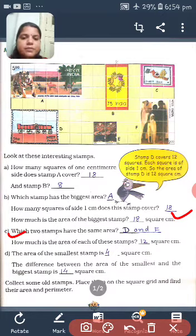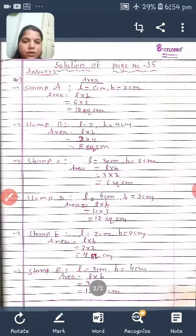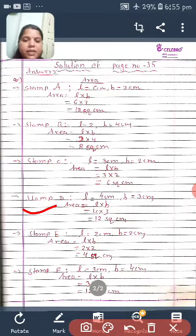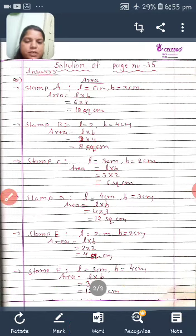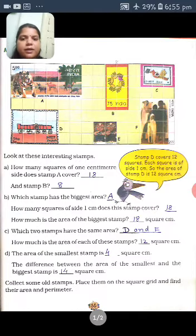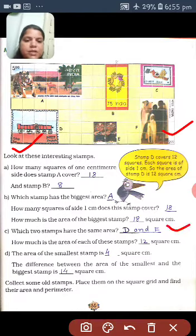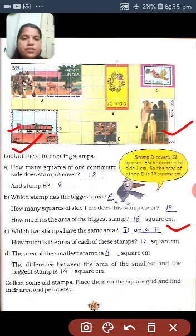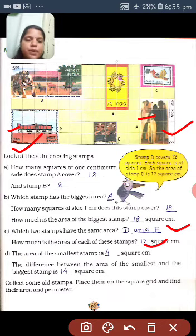Which two stamps have the same area? Again, you look at over here. Which two stamps have the same area? Can you tell me? Stamp D and stamp F. Both have 12 square centimeter area. How much is the area of each of these stamps? What is the area of them? Both are same. It is 12 square centimeters.